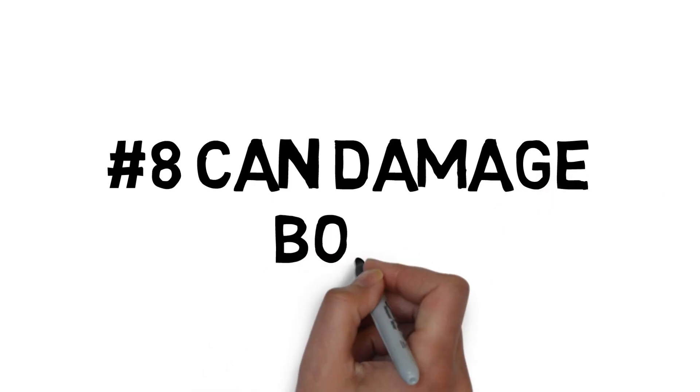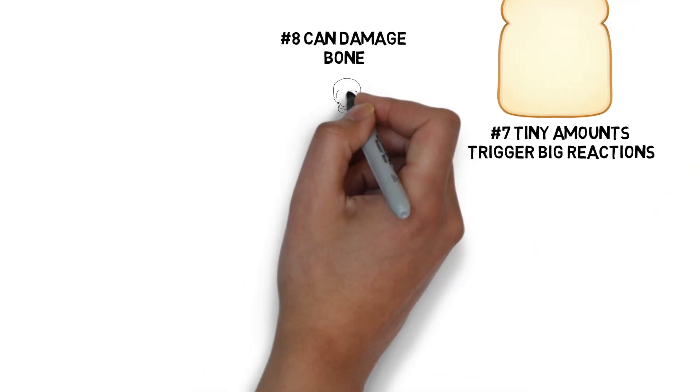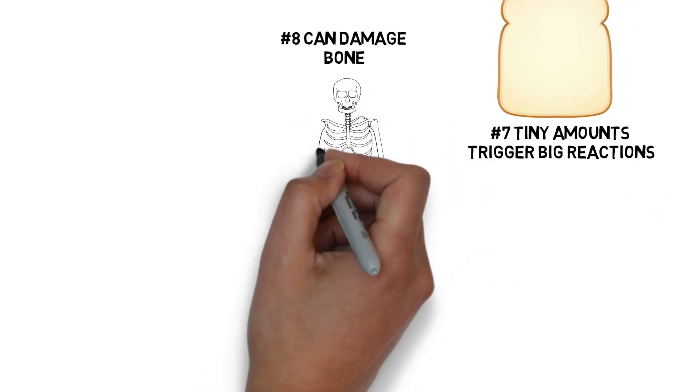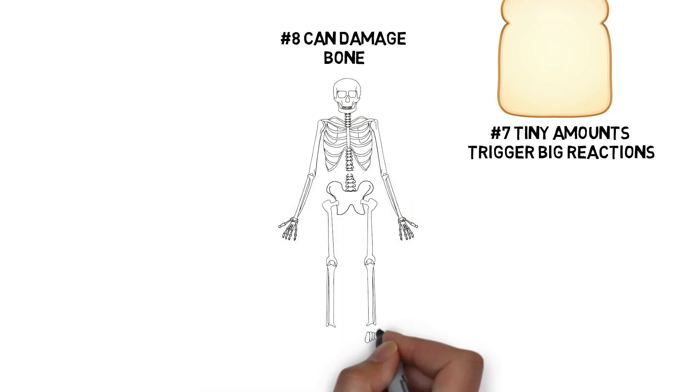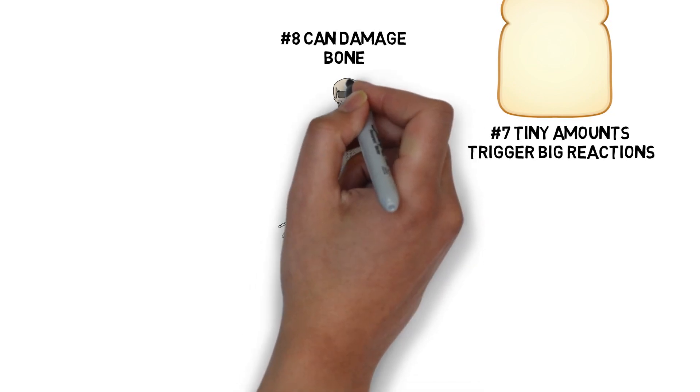Number 8. Celiac disease can damage bone. Bone loss and bone weakness are possibilities, and both lead to osteoporosis. In fact, it's recommended that patients with celiac disease go through regular screenings for osteoporosis to stay on the safe side.